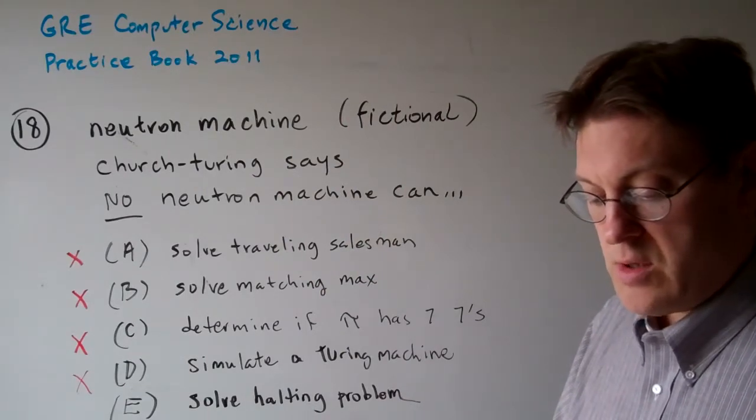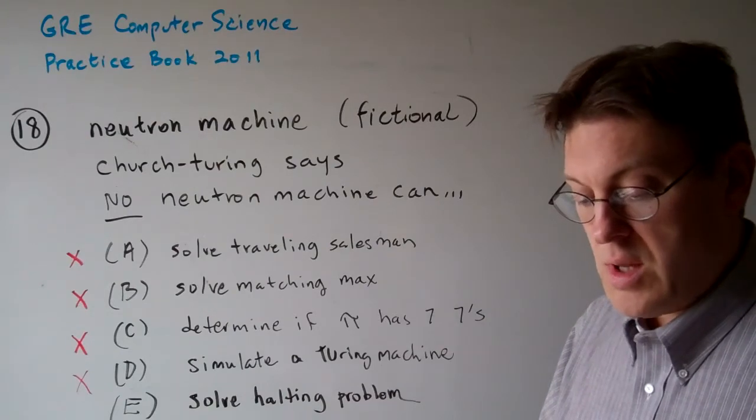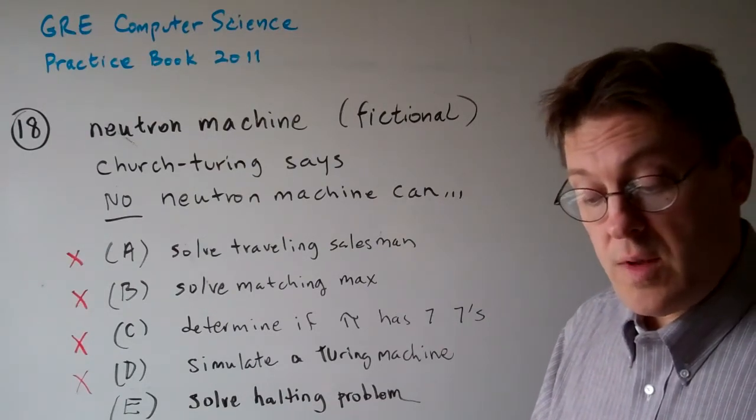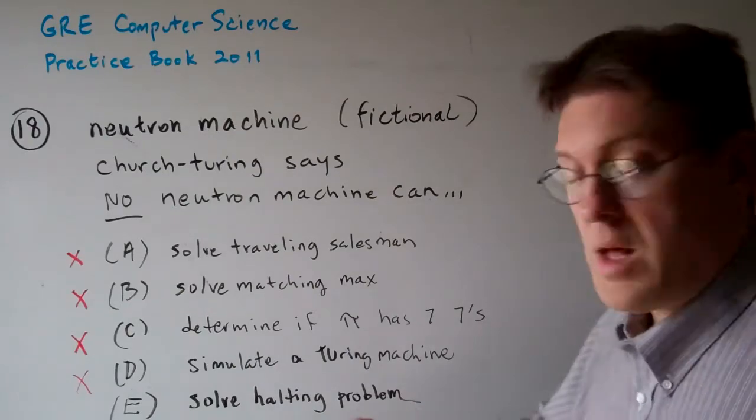Option E: No neutron machine can determine in polynomial time whether a given Turing machine halts when its input tape is initially blank. Now, that's the halting problem.